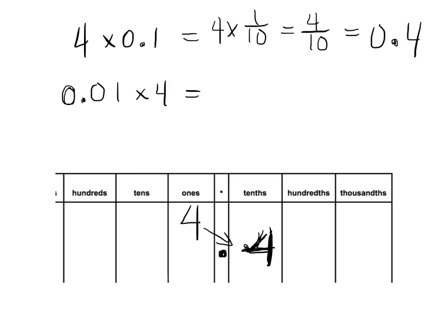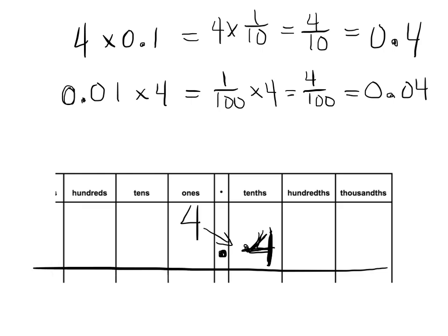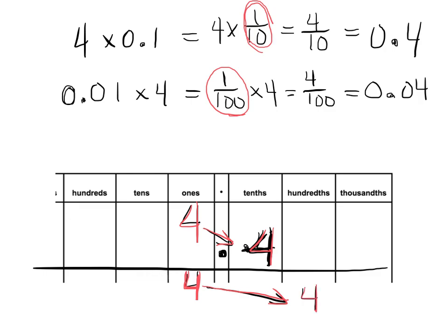Now let's do this other one: 1 hundredth times 4 is equal to 4 hundredths, which is equal to 0.04. We can see that we started out with a 4 in the ones place, but by multiplying by a hundredth, it moved two places to the right. So the big kicker: when we multiply by a tenth, our digit moves one place to the right because it got smaller by one tenth. When we multiplied by a hundredth, our digit got smaller by two columns — two places to the right.